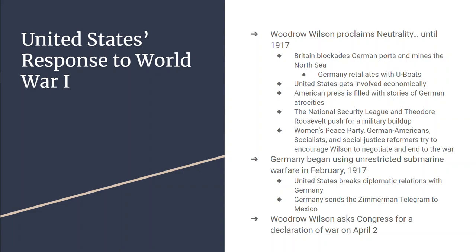British and French begin ordering war material from the United States in 1915. The United States does two and a half billion dollars worth of trade, and banks lend over three billion dollars to both Britain and France. Germany is technically allowed to trade with the United States too, but there's a British blockade that stops Germany from being able to trade.